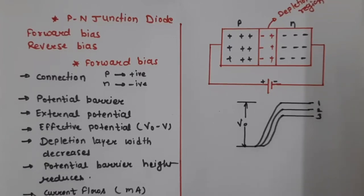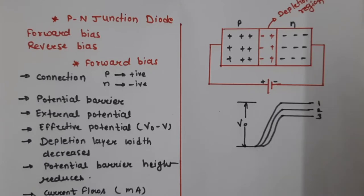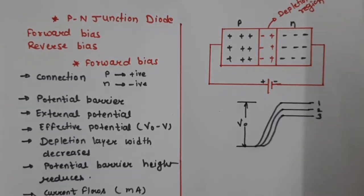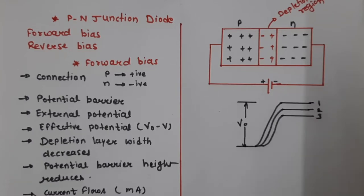Hello friends, once again welcome back to the class of NPC. My name is Trupti and today we will discuss one more important thing — PN junction diode biasing. Biasing is of two types: forward biasing and reverse biasing. Before starting, let me recall the previous class. In the previous class we studied the PN junction — the combination of P-type and N-type semiconductors. In P-type, the majority charge carriers are holes, and in N-type, the majority charge carriers are electrons.